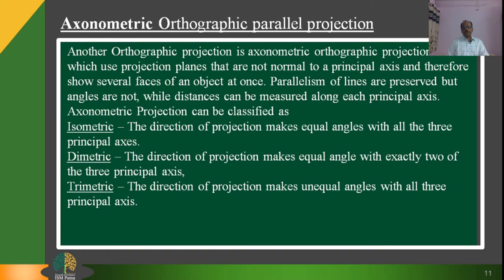Axonometric projection can be classified as isometric, diametric, and trimetric. In isometric projection, the direction of projection makes equal angles with all three principal axes. Whereas in trimetric projection, the direction of projection makes unequal angles with all three principal axes.